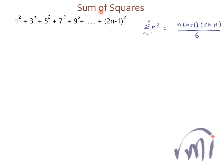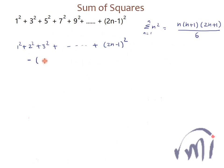So how do we find the sum of squares of odd numbers? What we can do is find the sum of squares of all the numbers till 2n minus 1, and then subtract the sum of squares of even numbers. This will give us the sum of squares of odd numbers.